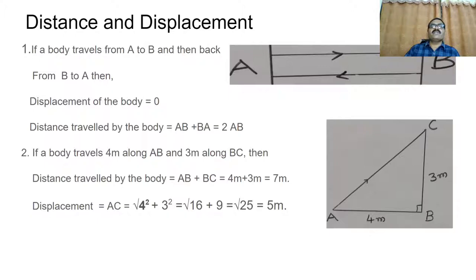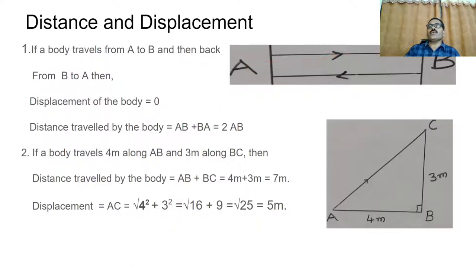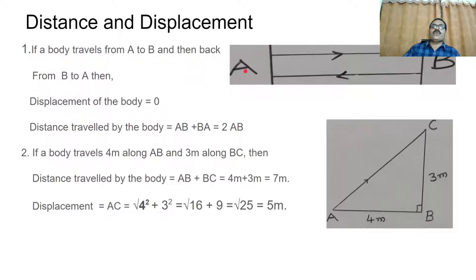Further, in order to understand the difference between distance and displacement, we consider some examples. If a body travels from A to B and then back from B to A, then the displacement of the body is 0. According to the definition of displacement, the shortest distance between two points in a specified direction is known as displacement. Since we returned to the initial position, displacement is 0. But the distance travelled is AB plus BA, that is 2AB.